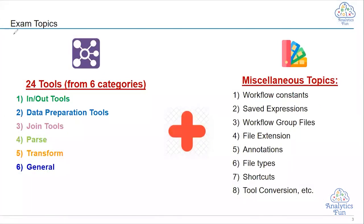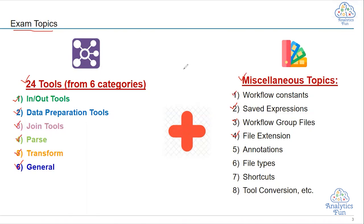Moving on to the examination topics, Alteryx will test you on 24 tools from six particular categories, along with some miscellaneous topics. The six categories are: input/output, data preparation, join, parse, transform, and general. The miscellaneous topics include workflow constants, saved expressions, workflow group files, file extensions, annotation, file types, shortcuts, tool conversion, and so on. This forms your full examination syllabus for the Alteryx certification.